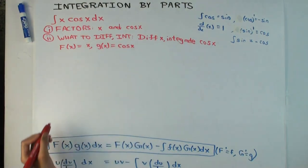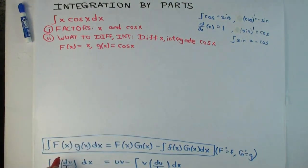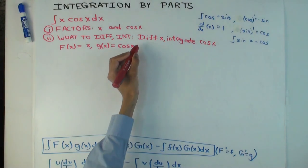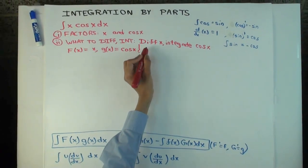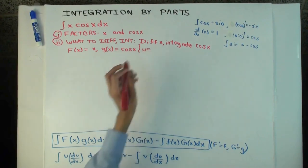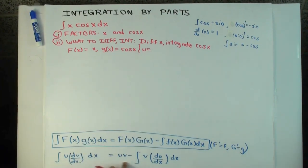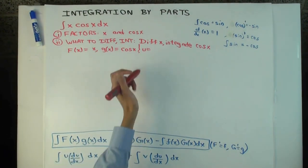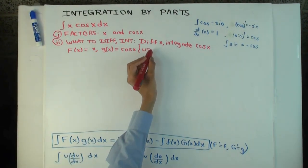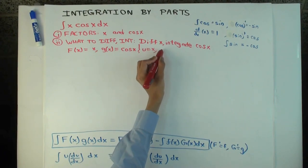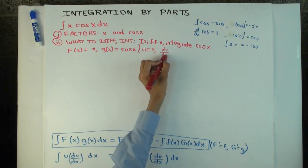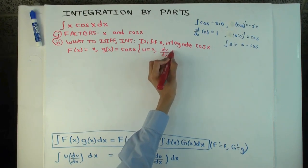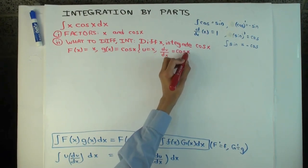Or if you want to use the uv notation, then u is x, and cosine x is dv/dx — not v — because dv/dx is cosine x.